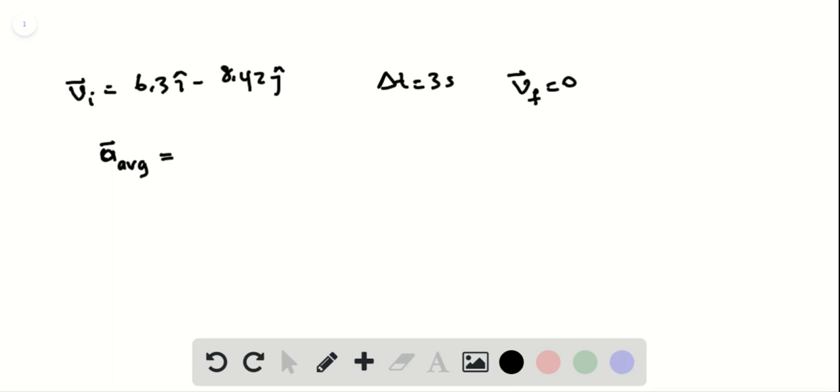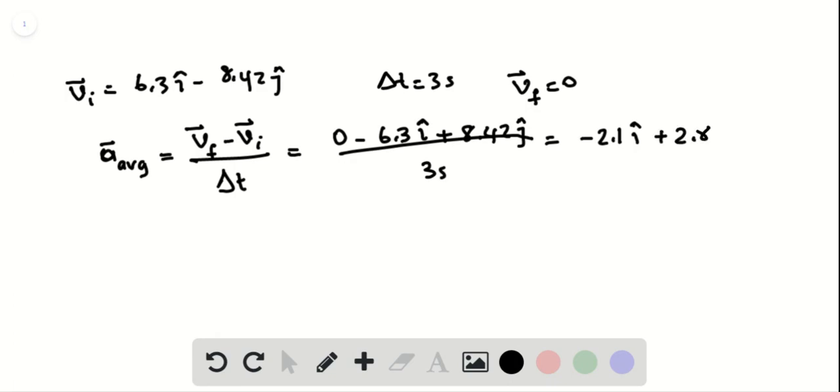So the average acceleration of the boat, this is a pretty straightforward problem, is going to be the final velocity minus initial velocity given the time interval. So the final velocity, as you know, is 0. The initial is 6.3i hat, 2 negatives is going to make a positive, 8.42j hat divided by 3 seconds. So then what we have here is the average acceleration of negative 2.1i hat plus 2.8j hat meters per second squared as the average acceleration.